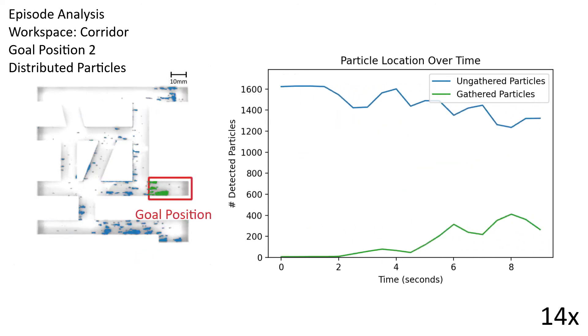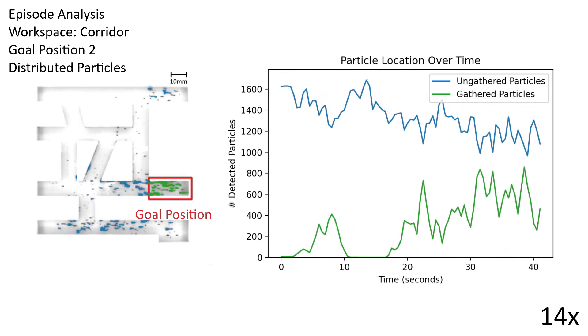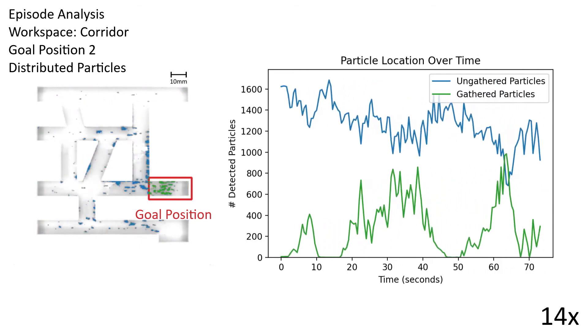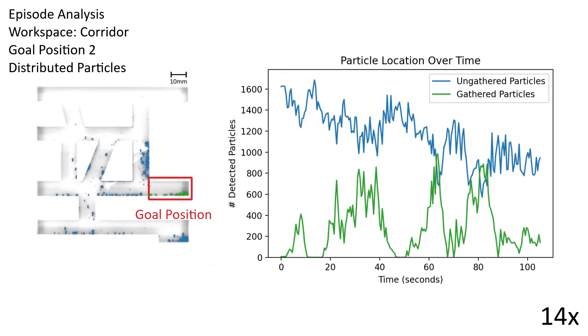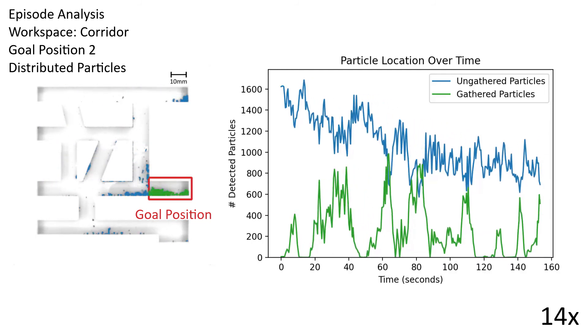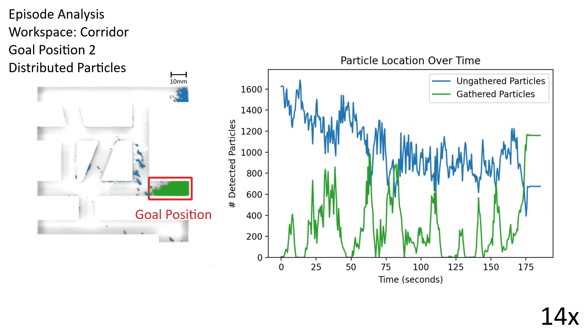Agents are trained using the proximal policy optimization algorithm and receive reward based on the distance of the particles to the goal. This reward is normalized to ensure the same reward independent of the workspace size.